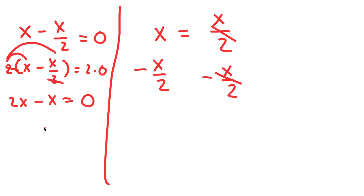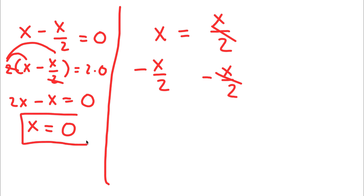Now, 2x minus x is x, so I have x is equal to 0. So this is my solution.